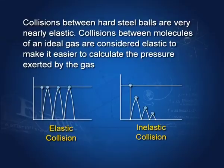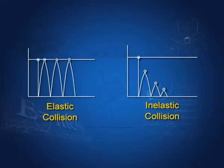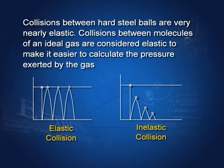Collisions between hard steel balls are very nearly elastic, as steel is a very elastic material. Collisions between particles of an ideal gas are thought to be totally elastic, so that one can calculate the pressure. If I throw a ball and it collides with the floor and bounces back to exactly the same distance, we say the collision is elastic. If the bounce amplitude decreases, then we say that the collision is inelastic.